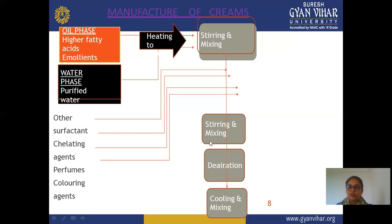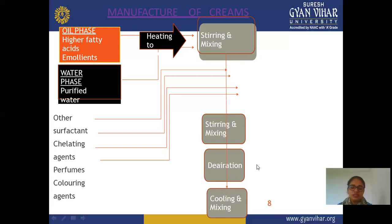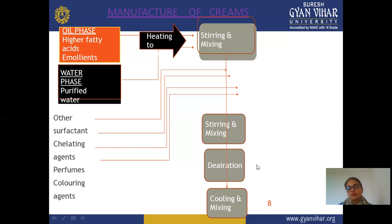After adding the ingredients, the de-aeration step removes excessive air from the formulation. Then cooling and mixing is done — you mix continuously or apply stirring until it cools to room temperature. Mixing is a very important parameter. If you do not mix properly, aeration remains in the formulation, phase separation occurs, and a homogeneous cream is not formed. These are the common manufacturing procedures for all types of cream.